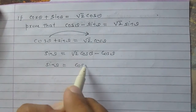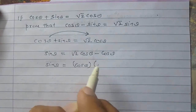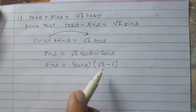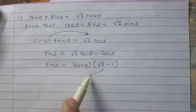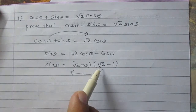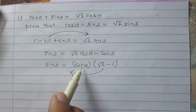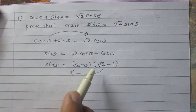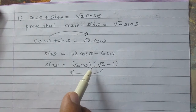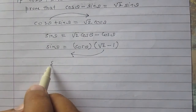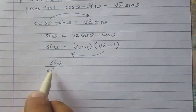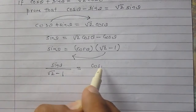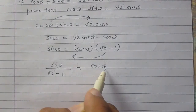The right hand side is square root of 2 cos θ minus cos θ. Since cos θ is common in these two terms, we can write cos θ as a common factor, and inside the bracket you will have square root of 2 minus 1. You can then transpose square root of 2 minus 1 to the left hand side. Since it is in multiplication with cos θ, transposing converts it to division, giving sin θ divided by (square root of 2 minus 1) on the left, and cos θ on the right.